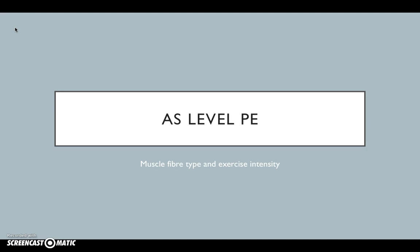So where we're at today is muscle fibre types. All of the skeletal muscle in our body is made up of muscle fibres, and these fibres fall into two main categories depending on their speed of contraction: slow twitch and fast twitch.